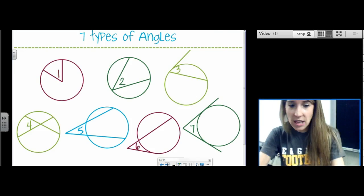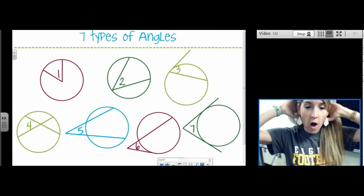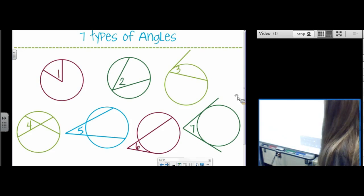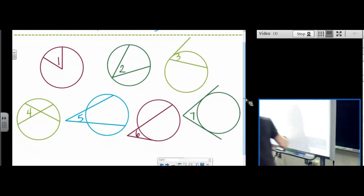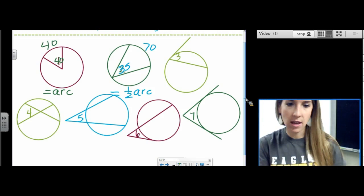Before we do the last lesson of the unit, let's talk about everything we know so far. We know how to solve all seven of these angles. We know that angle one is a central angle. We know that central angles are equal to their arc. They equal their arc. Yes, you have to memorize this. Number two is an inscribed angle. We know that inscribed angles are one half of their arc. So you find the intercepted arc and you divide by two, 70 and 35.